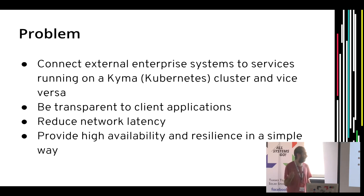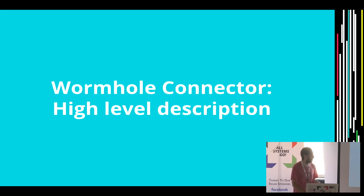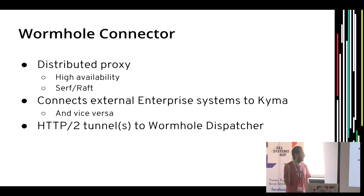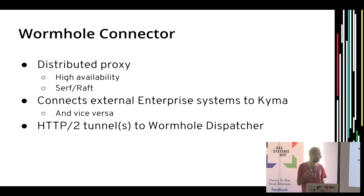They also want to provide high availability and resilience in a simple way — so you can just deploy your application to the external system without needing any Kubernetes or fancy distributed system. The wormhole connector, as we call this project, is basically a distributed proxy. Being distributed, it provides high availability: if a node goes down, it can continue fine. It's based on Serf and Raft, which are two distributed algorithms I'll talk about more later. It connects enterprise systems to Kyma and vice versa using an HTTP tunnel.